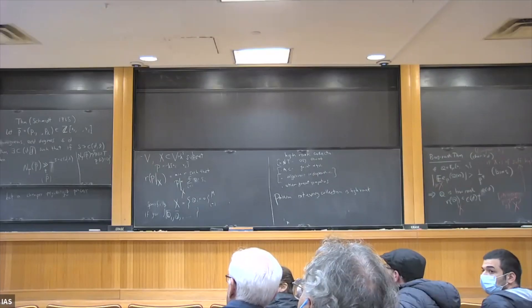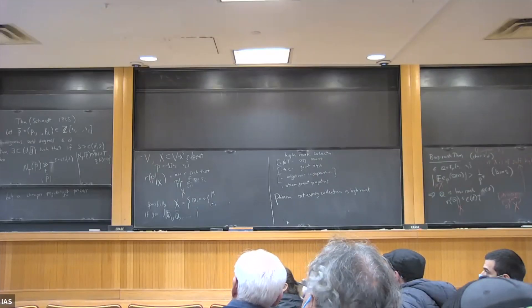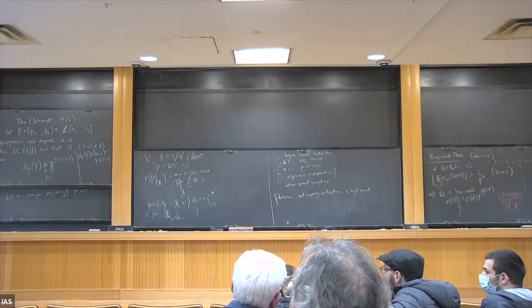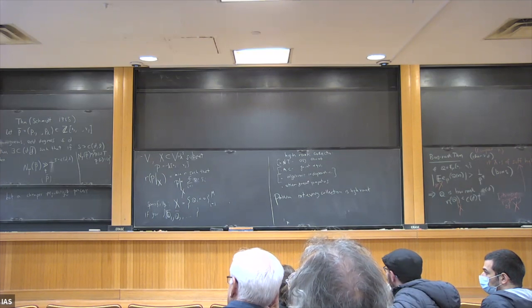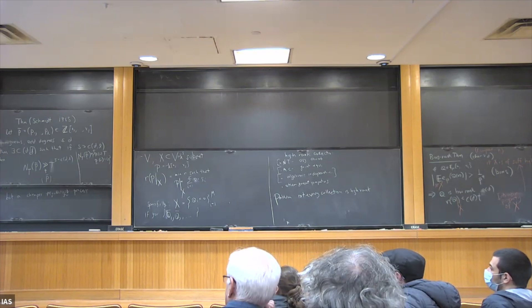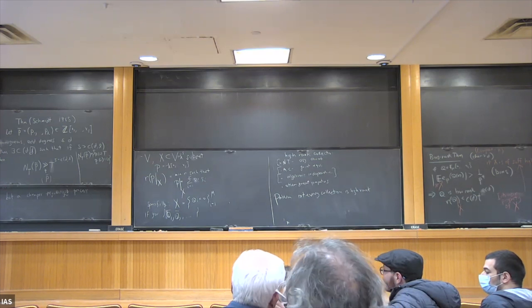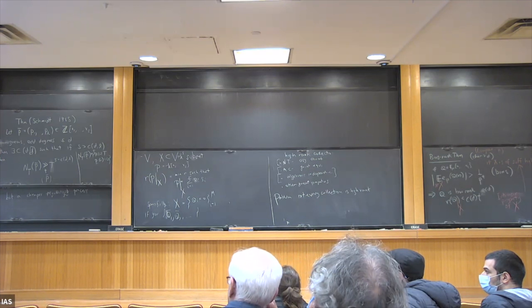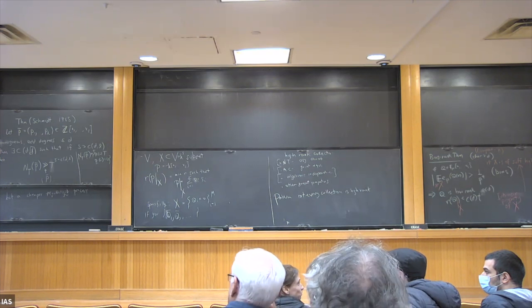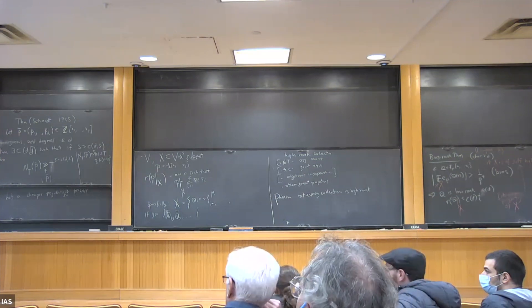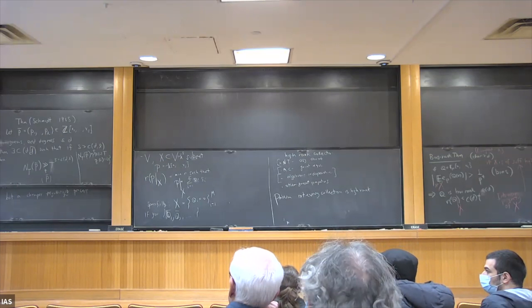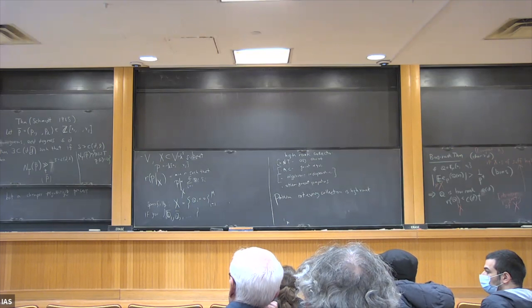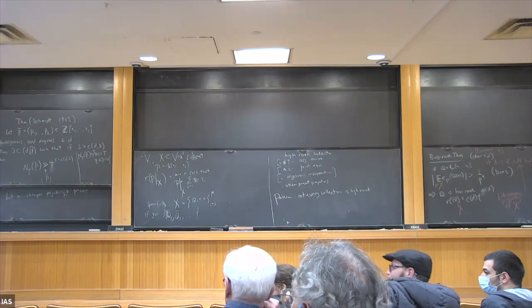The whole point is to make the new generating collection have a polynomial number of elements relative to the original. You start with L polynomials and get L to some power. The co-dimension is logarithmic, not polynomial. That's the key point. Thank you.